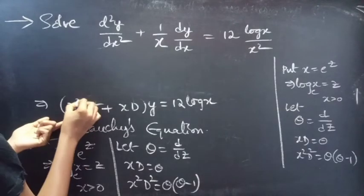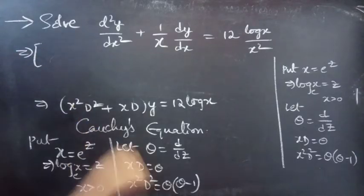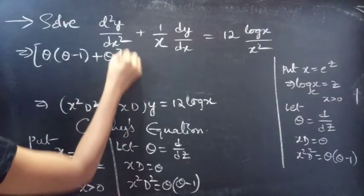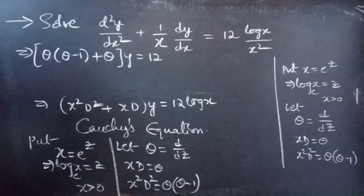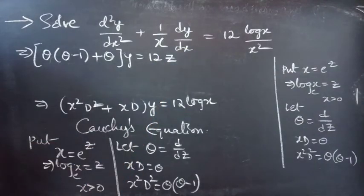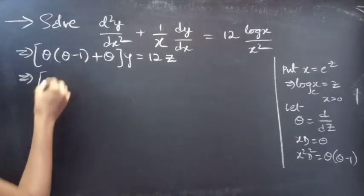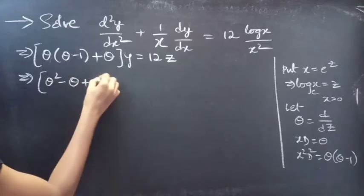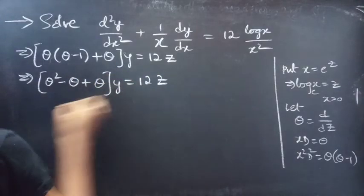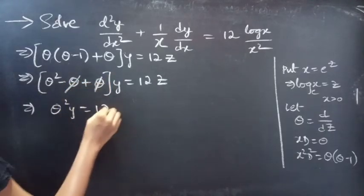Then Cauchy's equation becomes: replace x²·d² by θ(θ−1) and x·d by θ, giving [θ(θ−1) + θ]·y = 12z. Expanding: (θ² − θ + θ)·y = 12z. The −θ and +θ cancel, and we get θ²·y = 12z.